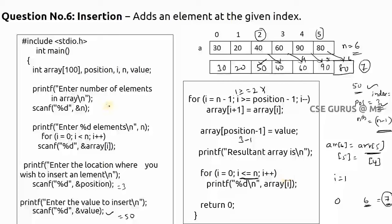So to summarize the code: this part gives the size, this part gives the elements, this part enters the position to insert, this part enters the value to insert, this is the logic that transfers elements to the right, and finally it prints the result. This is how we insert an element in an array. In the next video lecture we will see how to delete an element at a given index. Thank you.